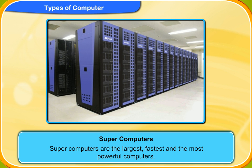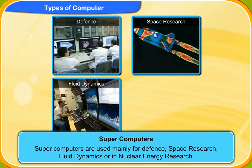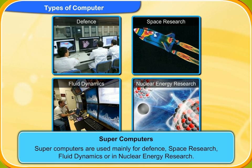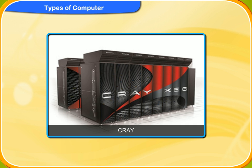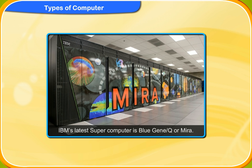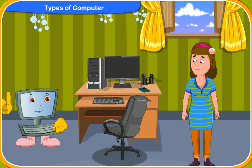Supercomputers are the largest, fastest, and the most powerful computers. Supercomputers are used mainly for defense, space research, fluid dynamics, and nuclear energy research. Some examples of supercomputers include IBM's latest supercomputer BlueGene/Q. So now, I hope you know about the different types of computers.